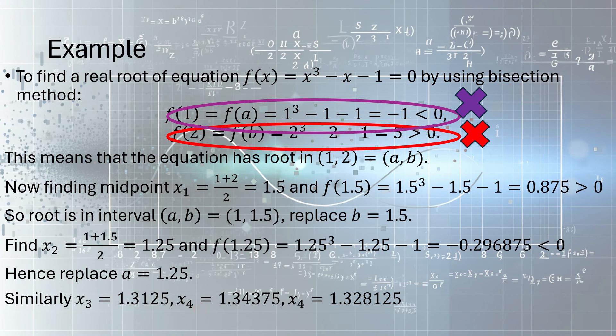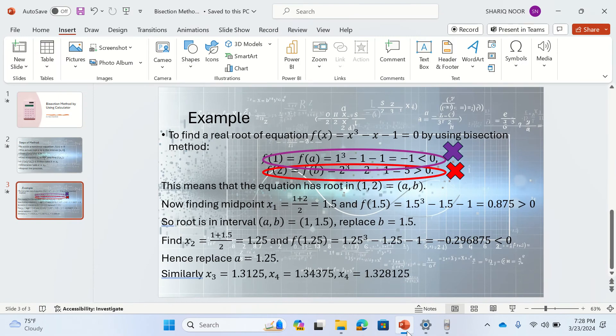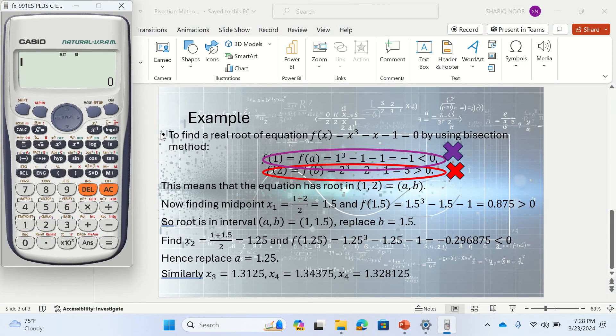Now, how do we do that through a calculator? The first step is you need to convert the matrix mode into math mode. That means you should go to 1 here. So you are now in math mode. And also keeping in mind, the calculator mode must be in radians if you're solving a transcendental equation having trigonometric functions.